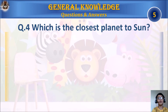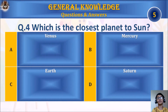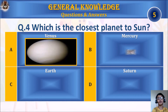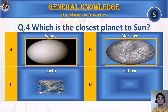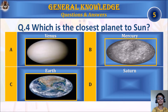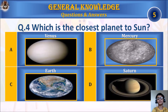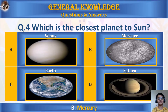Question 4: Which is the closest planet to the Sun? A. Venus, B. Mercury, C. Earth, or D. Saturn. Your time starts. The answer is B. Mercury.